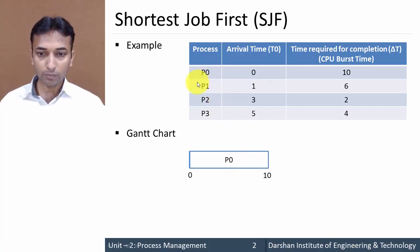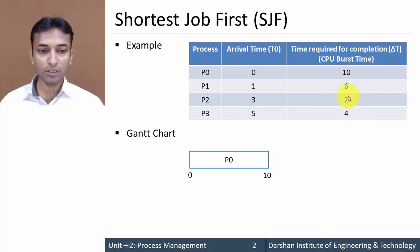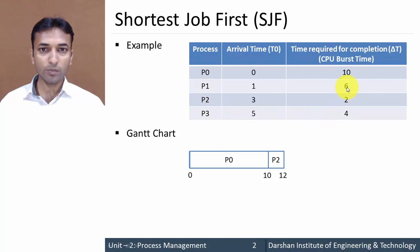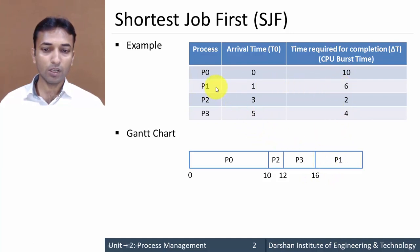At 10 milliseconds, three processes have arrived: P1, P2, and P3. P1 requires 6 milliseconds, P2 requires 2 milliseconds, and P3 requires 4 milliseconds. The minimum time required is 2, which is process P2, so the next turn is P2. It requires 2 milliseconds, so 10 plus 2 equals 12. Of the remaining two — P1 requires 6 and P3 requires 4 — the minimum is 4, so next is P3, finishing at 12 plus 4 equals 16. Finally, P1 requires 6 milliseconds, finishing at 16 plus 6 equals 22. All processes are completed — this is our Gantt chart.